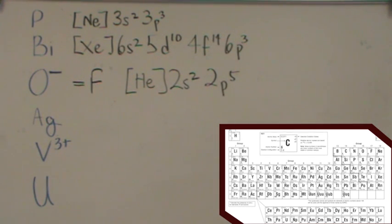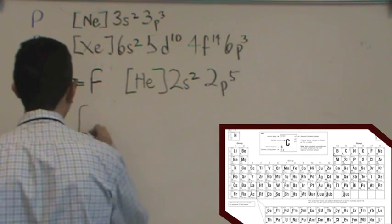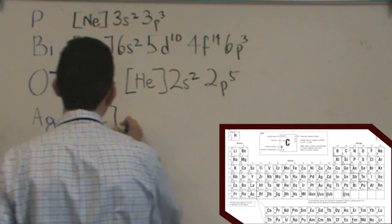All right. Let's do silver now. Silver, this is a little bit of a tricky one. We're going to write something down and erase it. But silver, the previous noble gas, is krypton number 36.